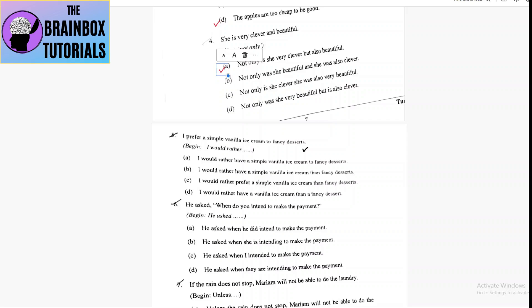Option A: I would rather have a simple vanilla ice cream to fancy - no. Option B: I would rather have a simple vanilla ice cream than fancy desserts - yes, this will be the correct option, number B.